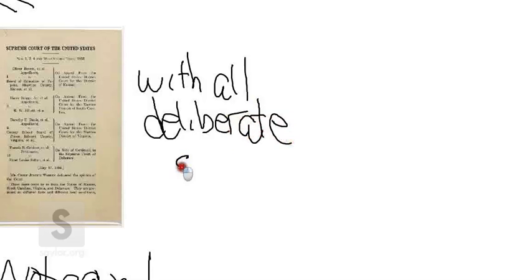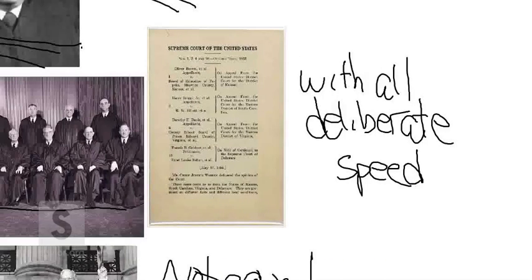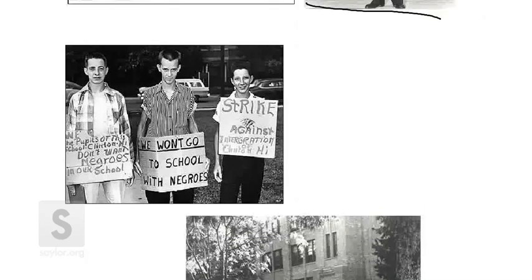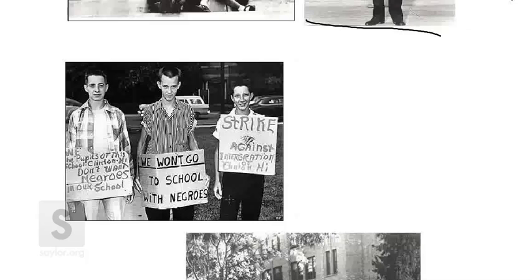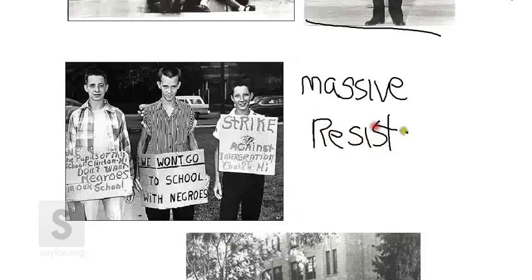In other words, schools can't take 10 or 15 years to integrate. They must do it right away, or at least show that they are attempting to do so. What happens as a result, though, is that there is a massive groundswell of resistance, especially in the Deep South, against public school desegregation. The phrase commonly used for this is 'massive resistance' — literally massive resistance. This becomes a policy that southern states pursue in order to try to fight or delay desegregation within the school systems.